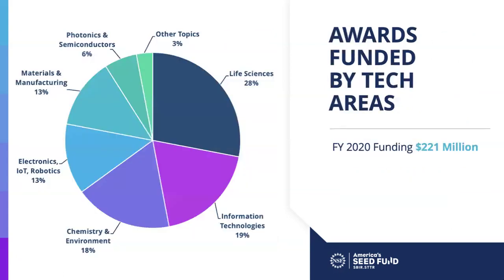As you can see, by FY 2020 funding, we do fund in a variety of domains. When we chunk them by category, you can see that in this year, 28% of the work that was supported was in the life sciences, whereas 19% was in information technology, and in other topics we have 3% of our allocated funding from 2021.